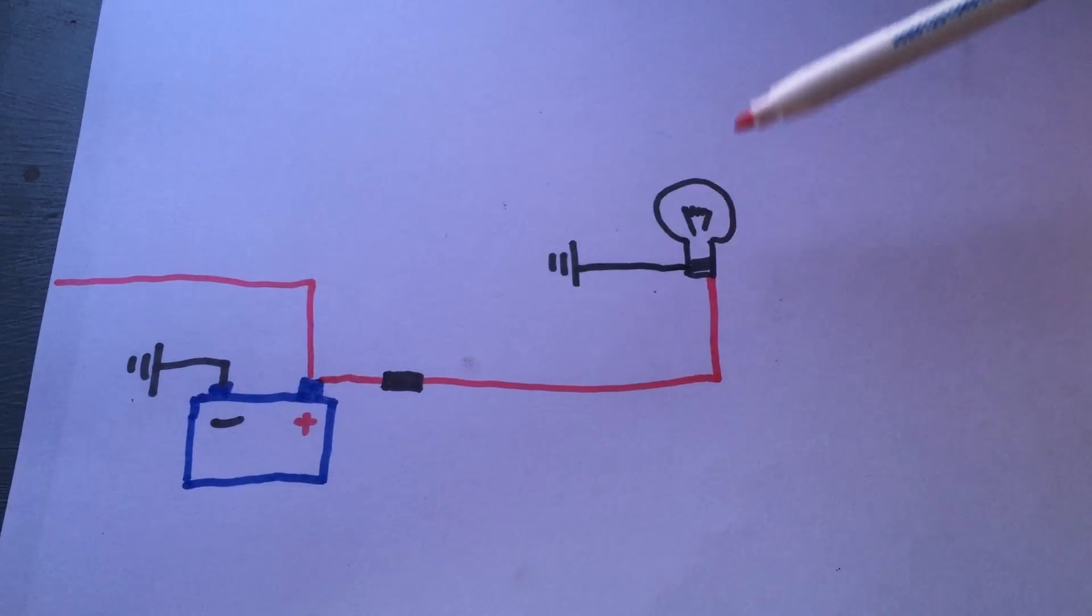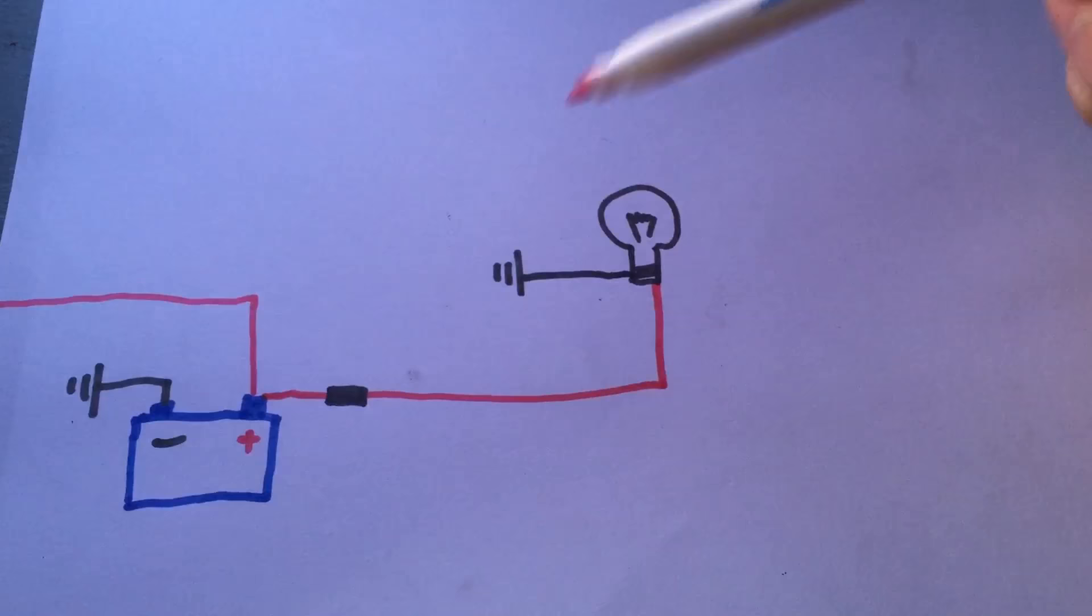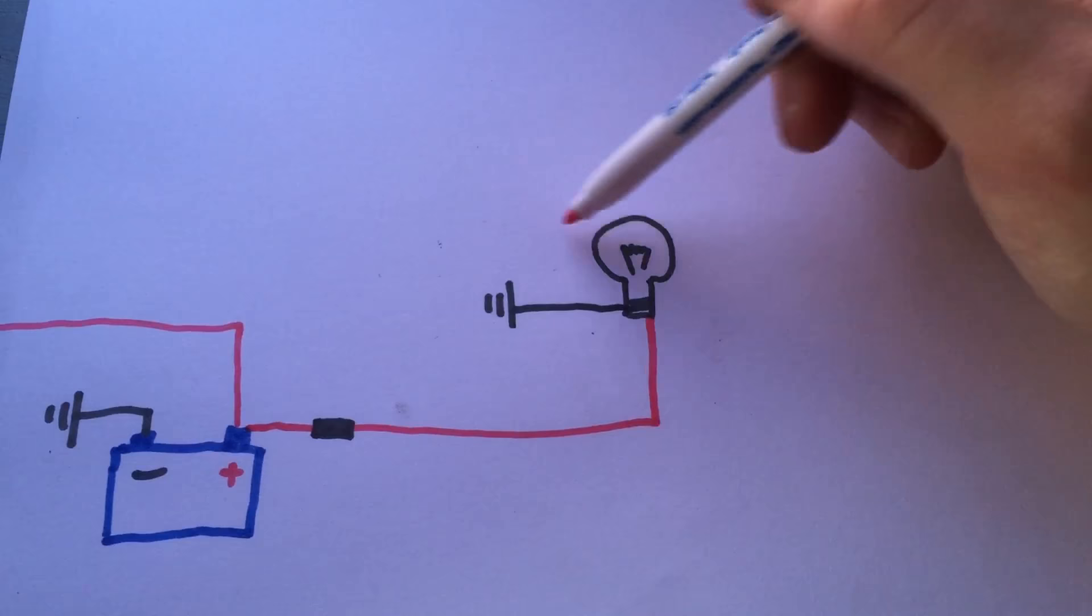So what this means essentially is before we can select which wire we're using and which fuse we're using, we need to actually figure out how much current, how many amps our appliance is going to be using.